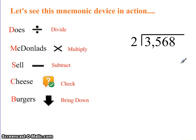Alright, let's see this mnemonic device in action. So our first step is going to be to divide. We're going to ask ourselves, how many times does 2 go into 3? It goes one time. Now we're going to multiply. 1 times 2 is 2.